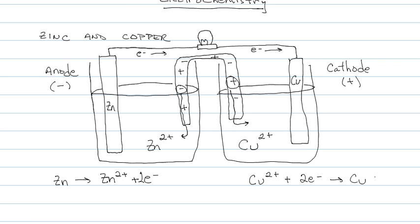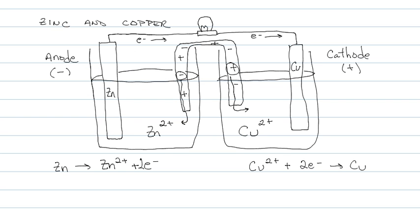So the mass of the zinc is going down and the mass of the copper is going up. We can also write a net ionic equation, which is the sum of the two half reactions, as long as electrons cancel out. So two electrons on the right cancel out two electrons on the left. We add together the left sides. So Zn plus Cu2+ gives Zn2+ plus Cu.